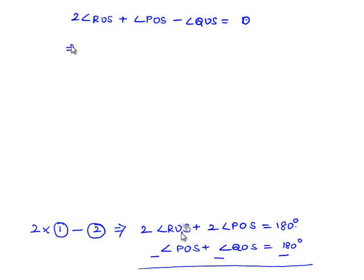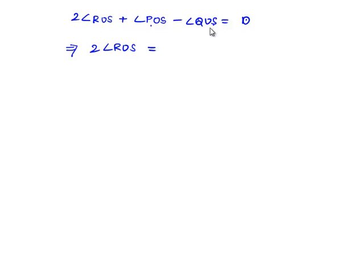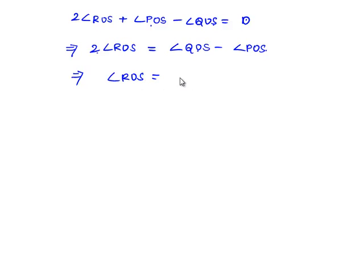That implies 2 times angle ROS equals angle QOS minus angle POS, after transposing angle POS and angle QOS to the right-hand side. Again, transposing 2 to the right-hand side, we get angle ROS equals half times angle QOS minus angle POS, which is the required proof.